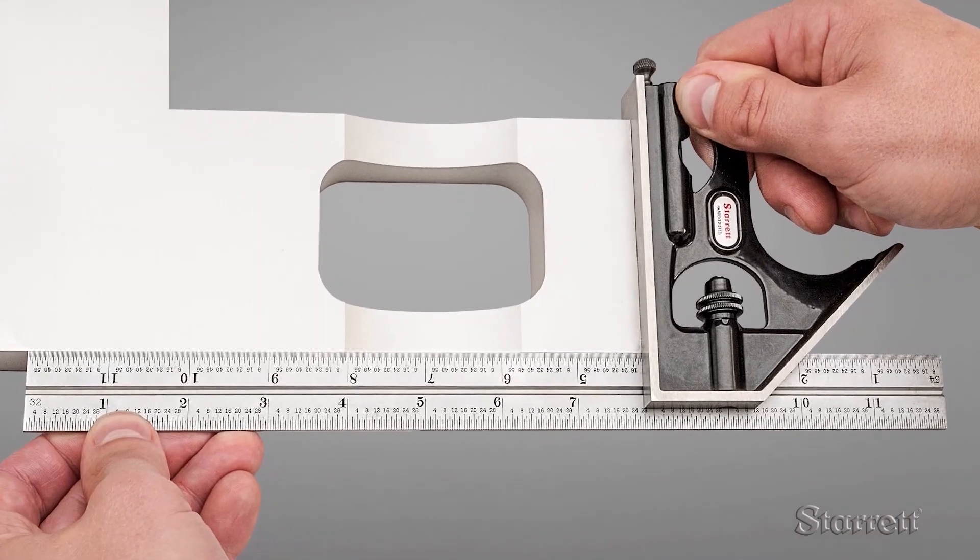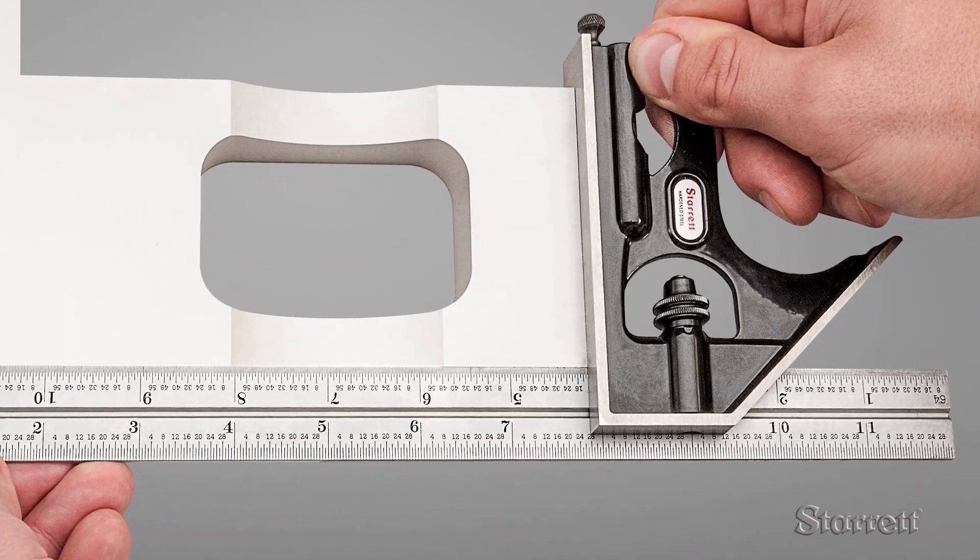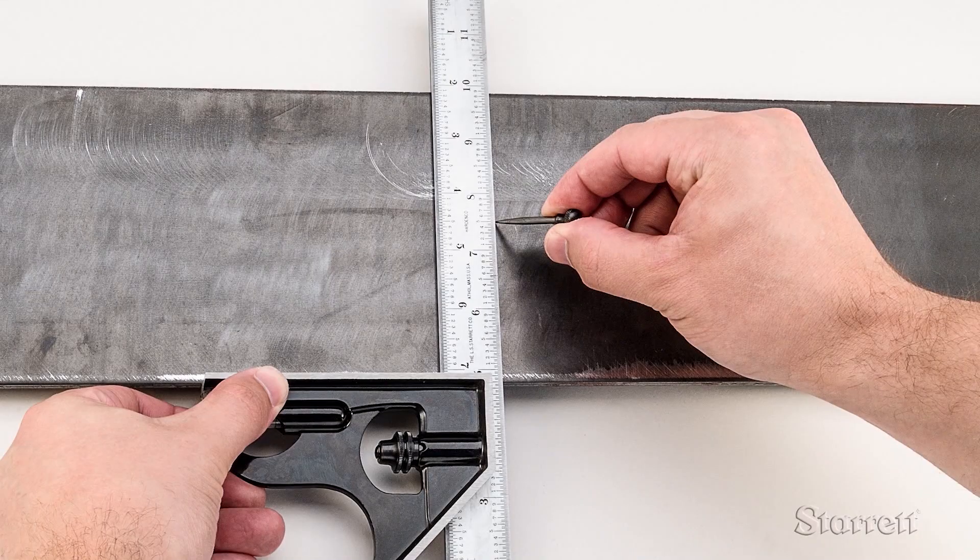Among its many applications, the combination square can be used to check for squareness, depth, and precise distance from an edge.